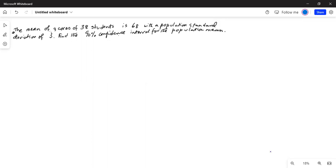The mean of scores of 38 students is 68 with a population standard deviation of 3. Find the 90% confidence interval for the population mean.